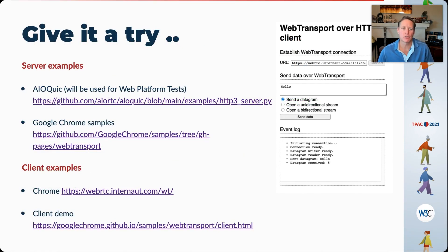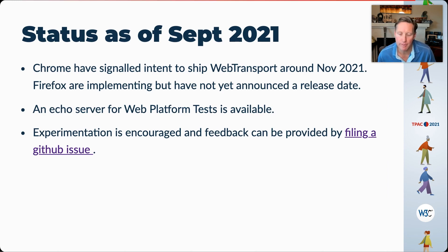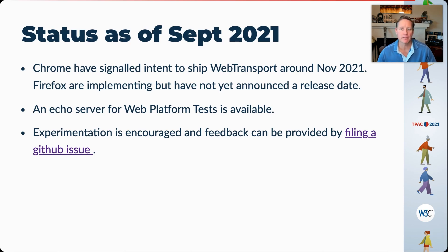We encourage you to give it a try. The aioquic open source library will be used as a basis for the web platform tests, and there's a server example linked there if you want to experiment with Web Transport. Google Chrome has also stood up a separate Web Transport server example leveraging the same library. On the client side, Chrome has supported an origin trial of Web Transport since version 84, and there's a public, relatively simple demo along with links to a client demo. As of September 2021, Chrome had signaled intent to ship Web Transport around the November 2021 timeframe. Firefox is implementing but has not yet announced a release date. There will be an echo server available for web platform tests, and we encourage experimentation — this is the perfect time, especially on the API side, to give our group feedback.